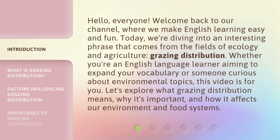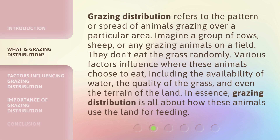Let's explore what grazing distribution means, why it's important, and how it affects our environment and food systems. Grazing distribution refers to the pattern or spread of animals grazing over a particular area. Imagine a group of cows, sheep, or any grazing animals on a field — they don't eat the grass randomly. Various factors influence where these animals choose to eat, including the availability of water, the quality of the grass, and even the terrain of the land. In essence, grazing distribution is all about how these animals use the land for feeding.